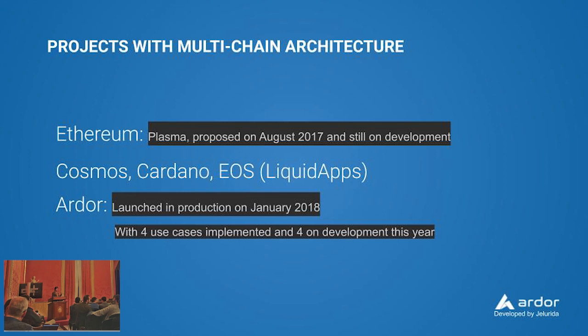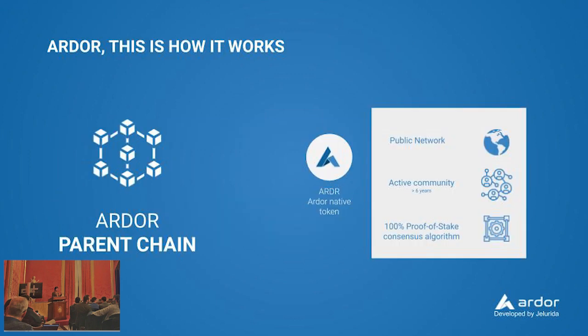I'm going to talk about the Ardor platform, launched and fully working in production since January 2018. In the case of the Ardor platform, the parent chain is a public network backed up by a solid and loyal community that is more than six years old. The community started in 2013 and uses the proof of stake consensus algorithm.